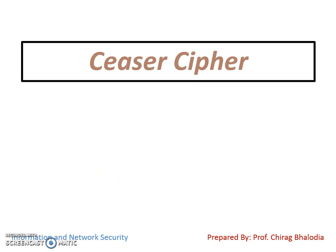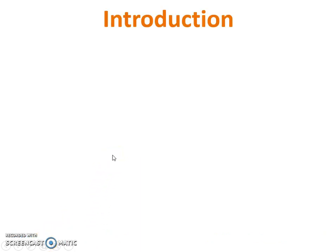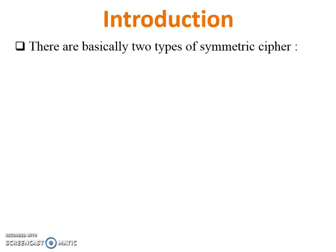Hello friends, myself Chirag Balodia. Today I am going to teach you Caesar cipher in information and network security. First of all, introduction: there are basically two types of symmetric cipher - first one is substitution cipher and second one is transposition cipher.